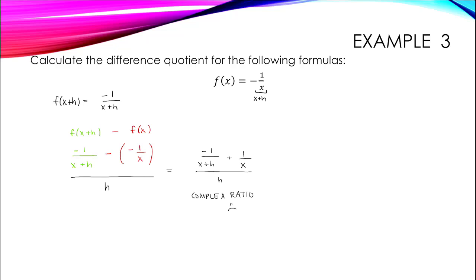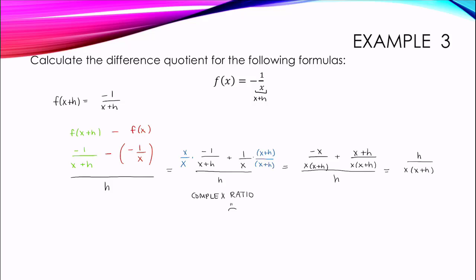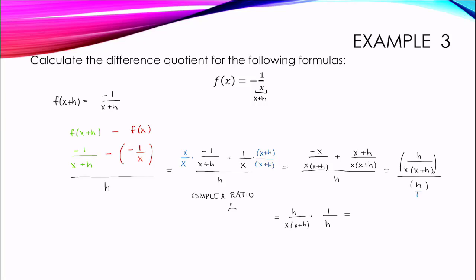Let's break down the algebra on these complex ratios step by step. To add the fractions in the numerator, we need a common denominator. We multiply 1 over x by x plus h over x plus h, and we multiply negative 1 over x plus h by x over x. This gives us numerator negative x plus x plus h over x times x plus h, which simplifies to h over x times x plus h. Since we are dividing by h, that's like multiplying by 1 over h. The h cancels, and that's how we get our final difference quotient: 1 over x times x plus h. You can check by plugging in h equals 0 — no division by zero, so we're good.